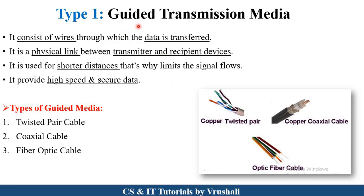The first type is guided transmission media. In guided media, they use a particular wired cable for sending and receiving information. There is a particular physical link between the sender and the receiver. That's why guided media is used for shorter distance purposes only. For example, in a local area network, there are 20 PCs connected in one lab, all connected with each other through a particular cable. It provides high speed and secure data.